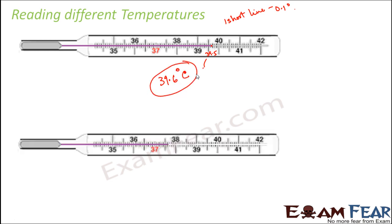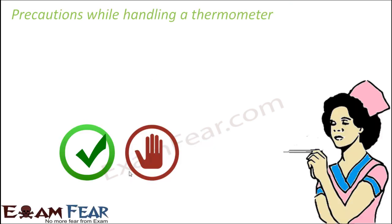Let's look at another example. Here the thermometer reading goes up to a certain point. This is 37, then after 37 you count 1, 2, 3, 4, 5, 6 — so till here it is 37.5. After that there is just one more short line, which is 0.1 more, giving a temperature of 37.6 degrees Celsius. This is how we measure temperatures using a thermometer.